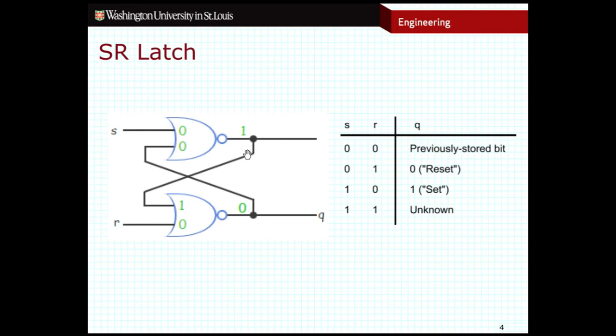that flips the output to be 0 again, which will then travel back to both of the cross-coupled inputs and cause the output to be 1, and then cause the output to be 0, and then 1, and then 0, and then 1.